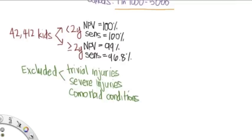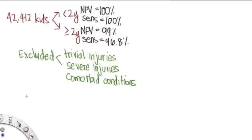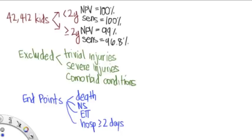And their endpoints, that is, the things that they were looking for that were the bad things that they were trying to exclude, included death from the traumatic brain injury, they required neurosurgery, they needed to be intubated, or required a hospitalization of two or more nights. That is, anything more than just an observation state.